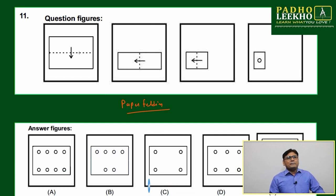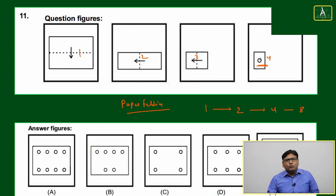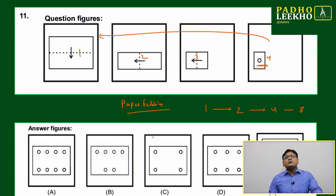How many foldings are happening here? One, two, three, four—four foldings are happening. After unfolding, once we unfold the paper, how many holes must be there? You must have eight holes.